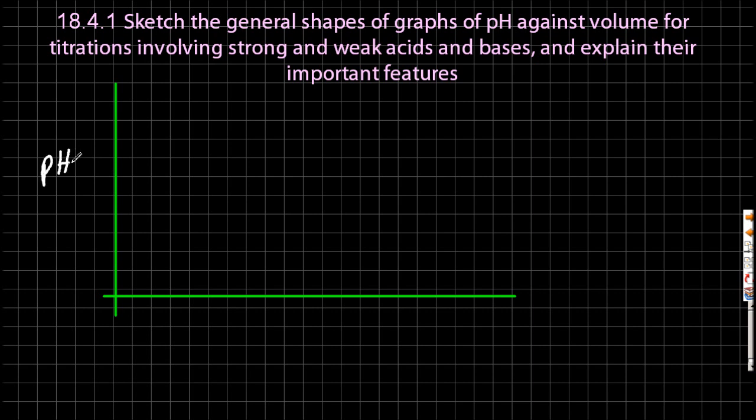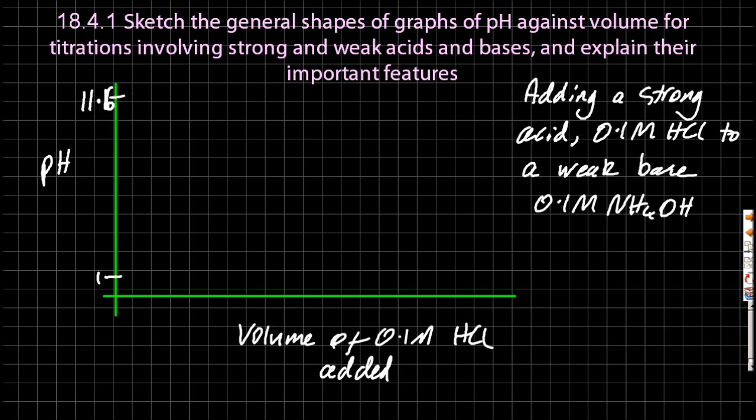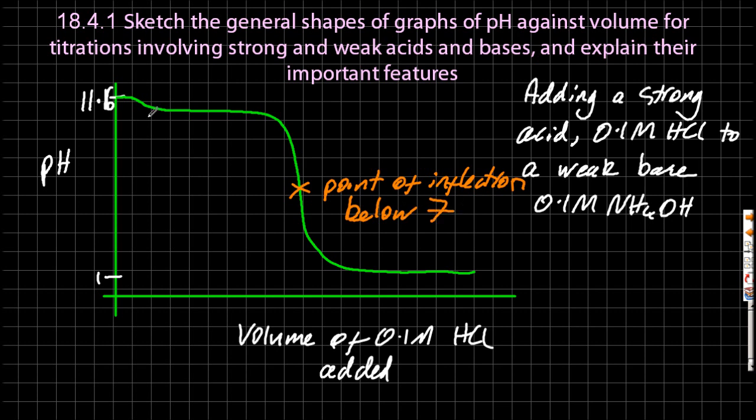One more graph. So this time, I'm actually going to add acid. Before I've been adding base, I'm going to add a strong acid to a weak base. So starting off with a weak base, I'm trying to draw a little wibble there to show yet another buffer. And we end up at pH 1, which is essentially just the acid and its salt. So the point of inflection, again, is below 7. It's towards the stronger chemical.